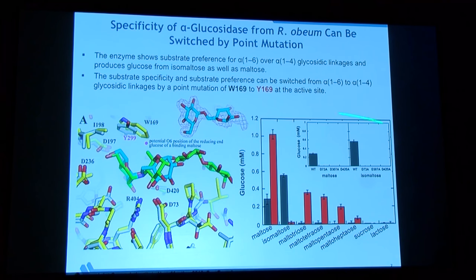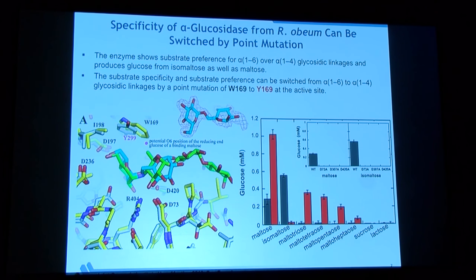When you look at sequences of alpha-glucosidases from that family, in this position there are always either tryptophan or tyrosine. It turns out nature is already using that information — when needed, it will hydrolyze either alpha-1,6 or 1,4 glycosidic bonds.